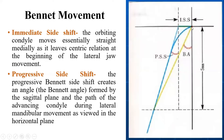To recap: this is immediate side shift — the condyle first moves in a straight line in the medial direction, and then it starts to move anteriorly, which is the progressive side shift. If you join the initial and final position dots, it will make an angle called the Bennett angle.